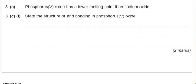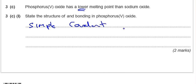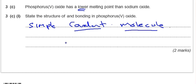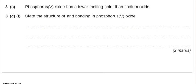Phosphorus 5 oxide has a lower melting point than sodium oxide. The question says: state the structure of and bonding in Phosphorus 5 oxide. Very simple. Just writing 'covalent' won't get you any marks. You need to say it's a simple covalent molecule — there are two marks for it being covalent and being a molecule. You also need to state that it's simple — it's not a giant molecular structure like silicon dioxide. Okay, so I'm going to switch the pen off and scroll down to the next one.